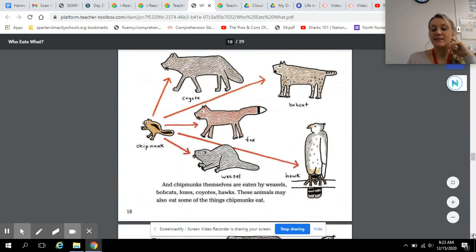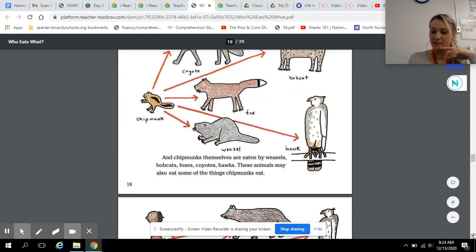And chipmunks themselves are eaten by weasels, bobcats, foxes, coyotes, hawks. These animals may also eat some of the things chipmunks eat.